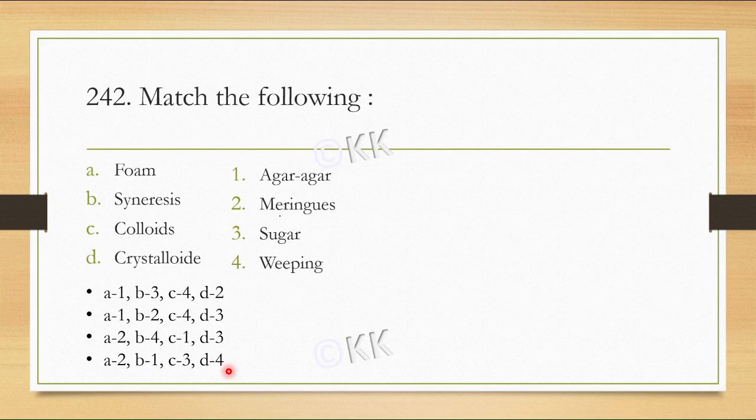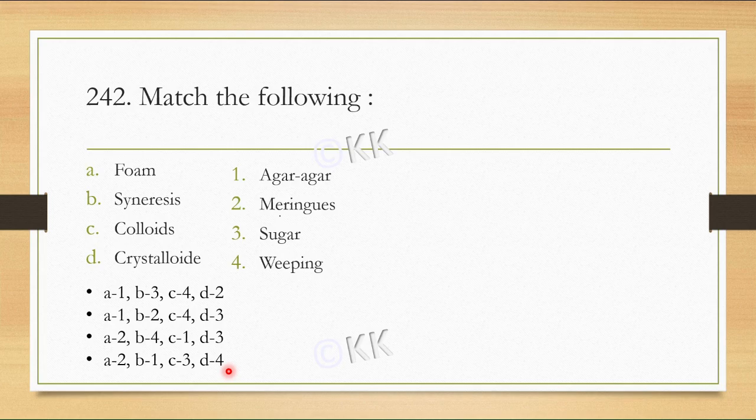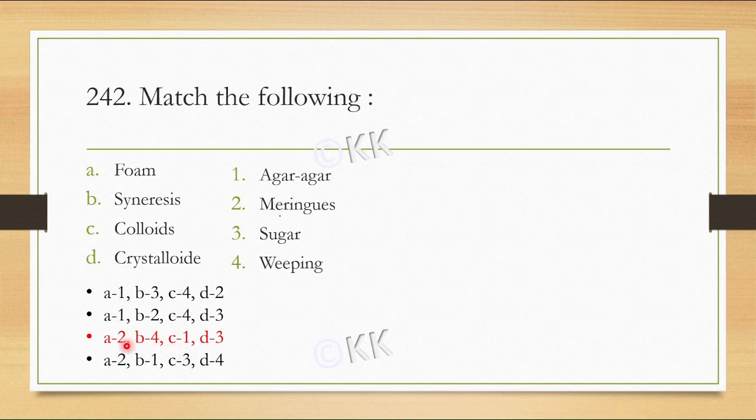The correct answer is option B: a1, b2, c4, d3. Foam is agar-agar, syneresis is meringues, colloids is weeping, and crystalloids is sugar.